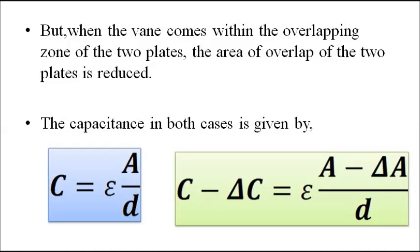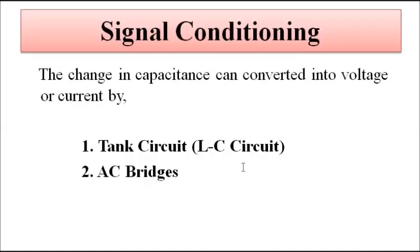To convert this change in capacitance into a suitable voltage, we have to use a signal conditioning circuit. This signal conditioning can be in the form of a tank circuit — an inductor-capacitor (LC) circuit — or we can use AC bridges involving capacitance. So the signal conditioning mechanism can either be a tank circuit or an AC capacitance bridge to convert it into a suitable voltage or current signal.